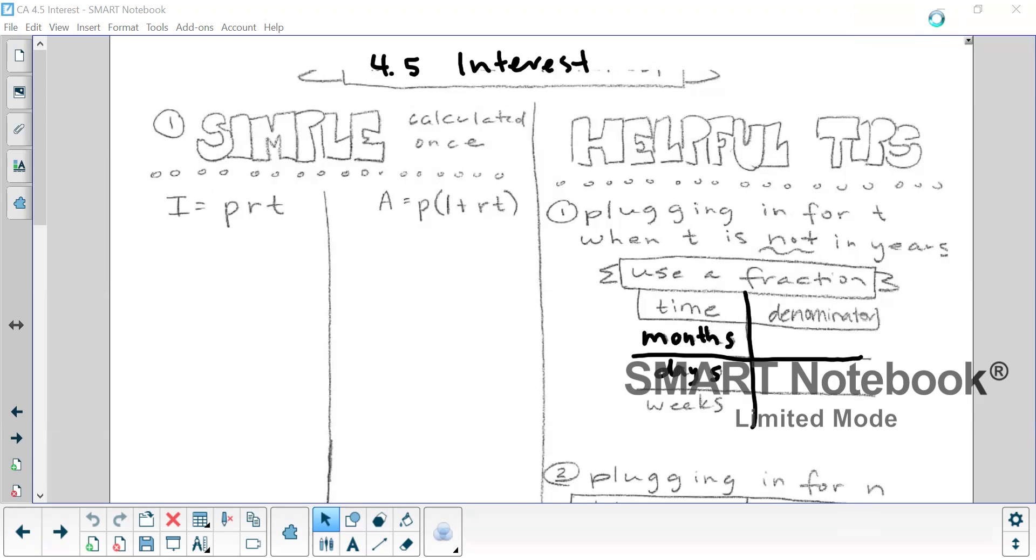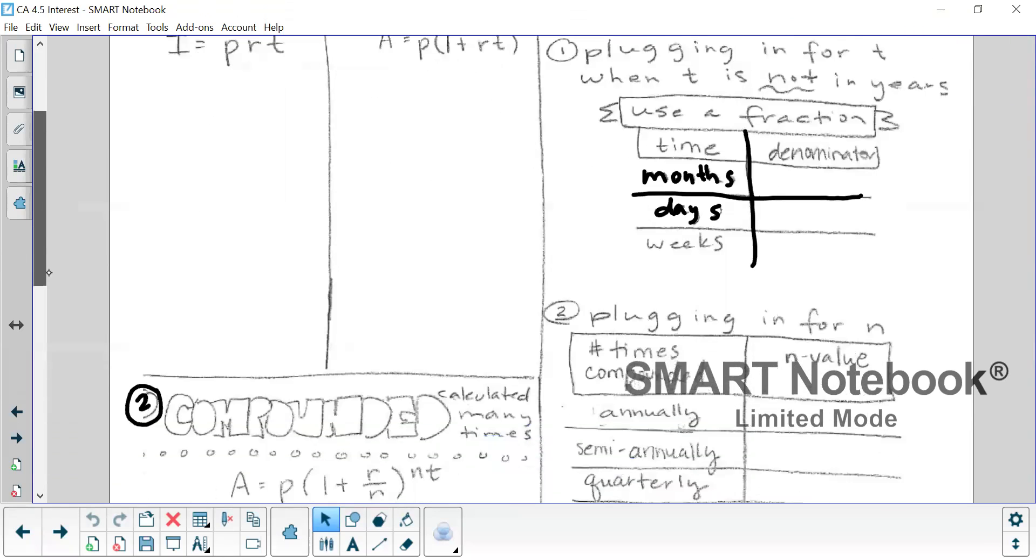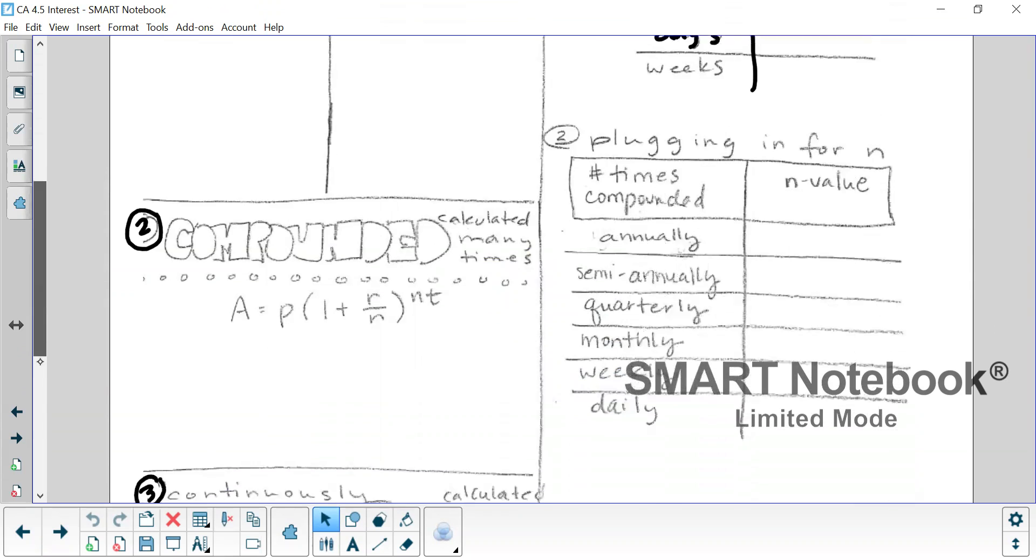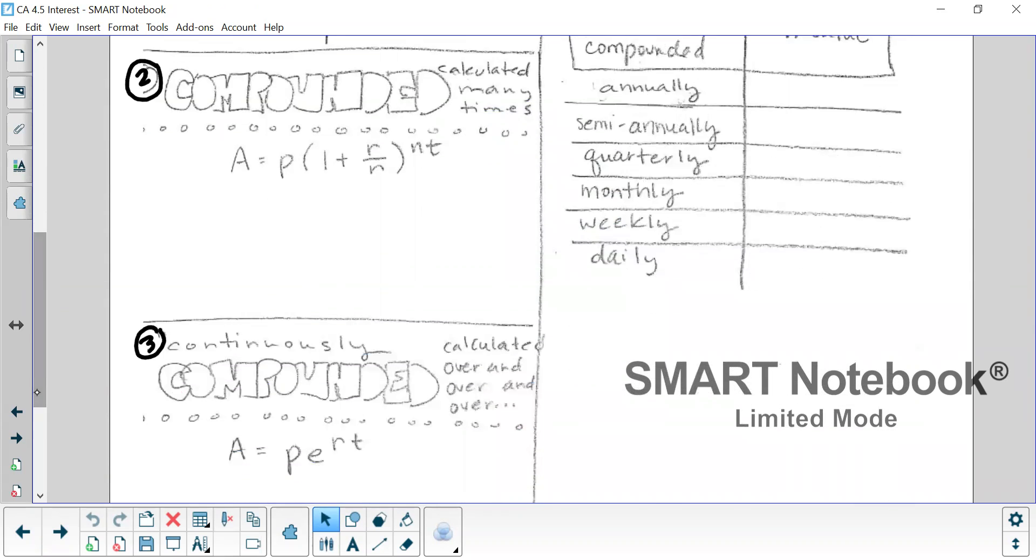Okay, so this lesson is on interest and we have three kinds of interest to talk about today. The first one at the top of the screen is simple interest, the second one is in the middle on the left compounded interest, and the third one is continuously compounded. Through the lesson I'll talk about the differences in those.